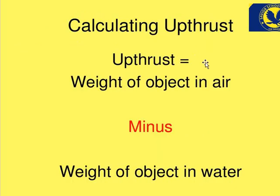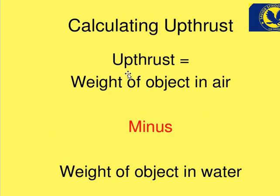Next, calculating up thrust force — how can we calculate it? Up thrust force equals the weight of the object in air minus the weight of the object in water. When we subtract the weight of the object in water from its weight in air, we get the up thrust force. The difference between the weight in air and weight in water gives us the up thrust force. Hopefully that is clear.